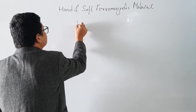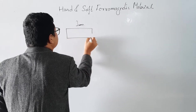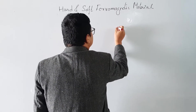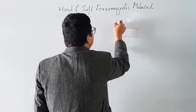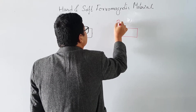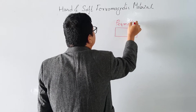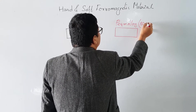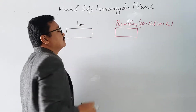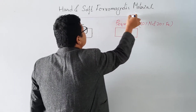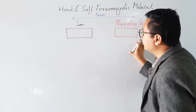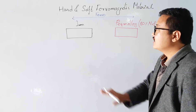Let us consider two magnetic materials. One is iron — and we know iron is a ferromagnetic material. The other material is an alloy called Permalloy, which is made of eighty percent nickel and twenty percent iron. Both of these magnetic materials are ferromagnetic materials.